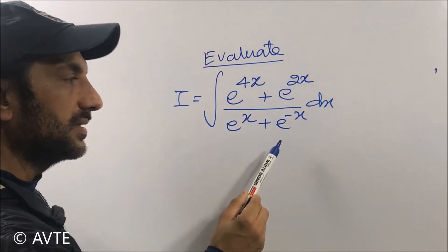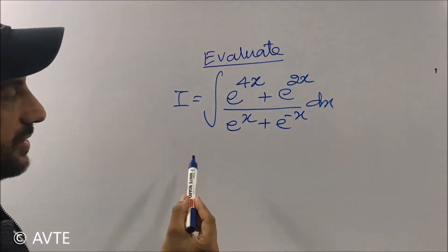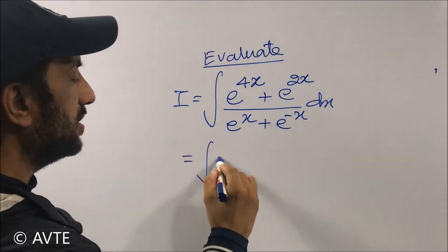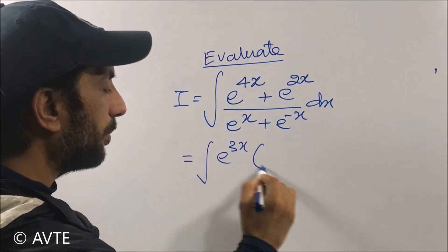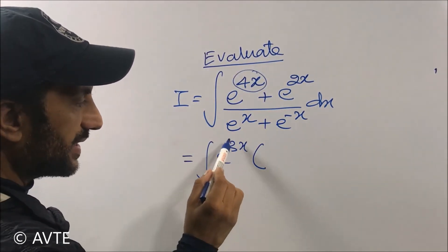But see the question—can't you take e^(3x) directly common? Because the advantage is, this is 4x, and as you take 3x common, you will be left with e^x in the numerator, and here you will be left with e^(-x).